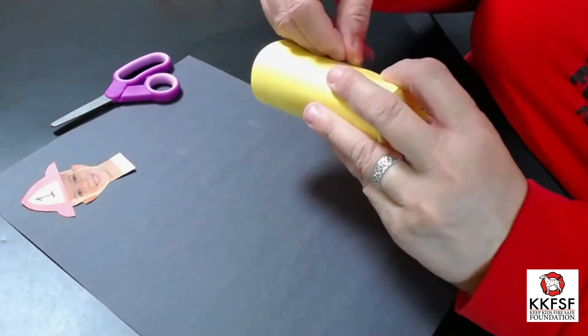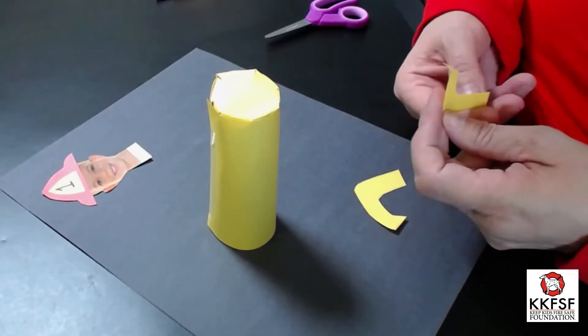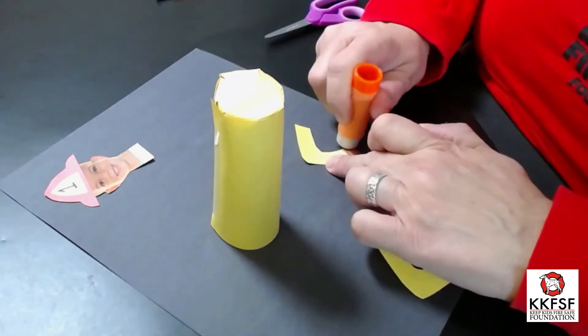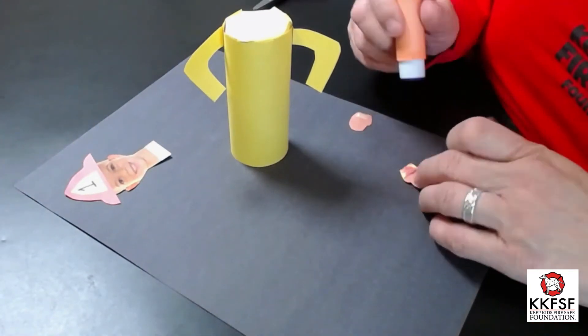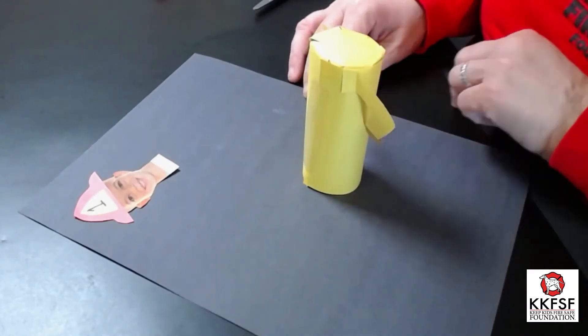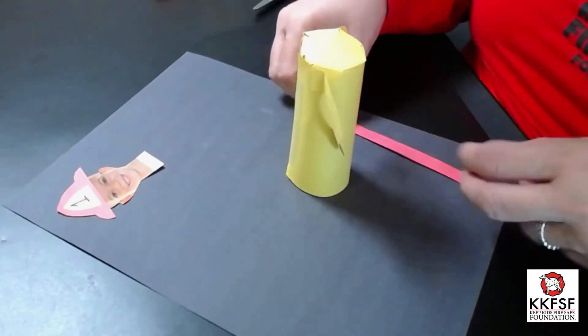Next you want to take the arms, apply glue, and apply them to your firefighter. Then take the rest of the items and glue them on your firefighter roll.